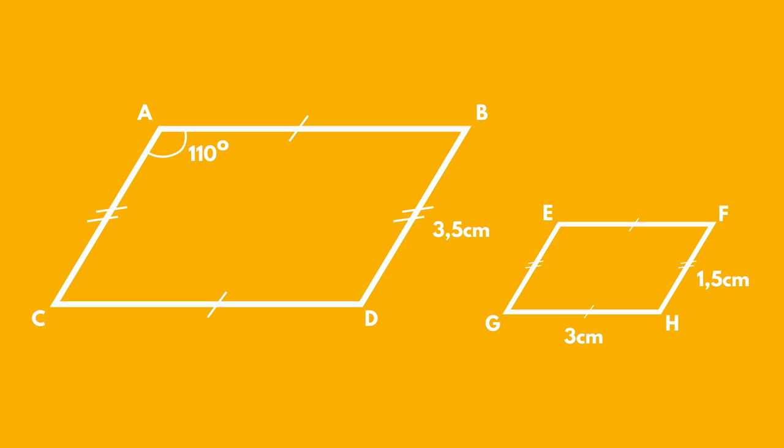Let's solve a problem now. Below we have two similar parallelograms. What is the length of CD? What is the similarity ratio of EFGH to ABCD? 3 by 7. What is the size of angle E? E is 110 degrees because the two parallelograms are similar.